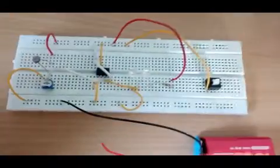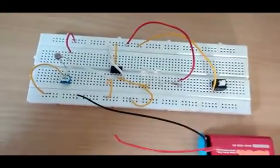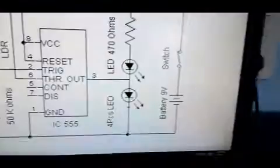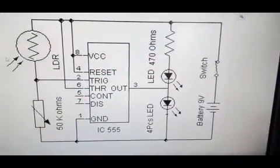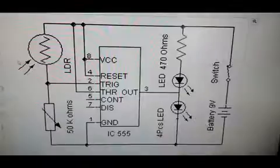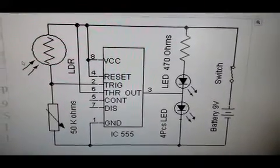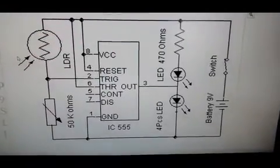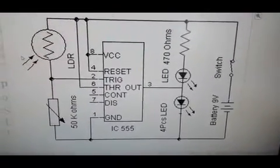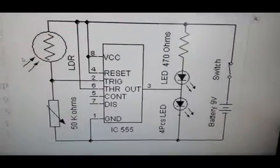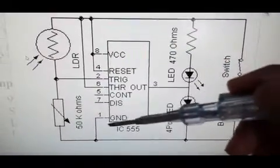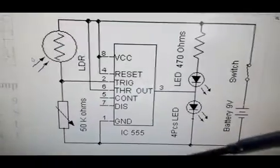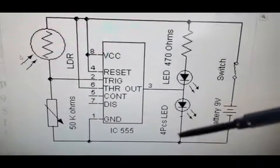Now I will show you the connection diagram. You have to connect according to that connection. You have to refer to this circuit in order to make the connection. You just need to have the idea of basic series and parallel connection and it is very easy. Here are the pin alignments — in this way you have to connect in the breadboard.